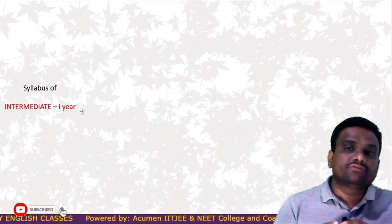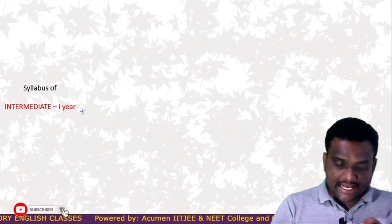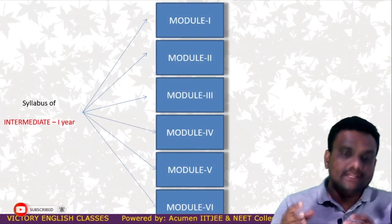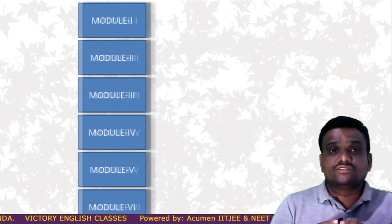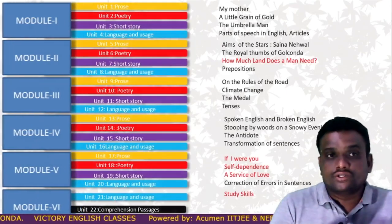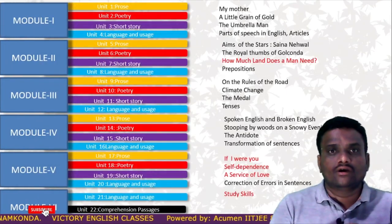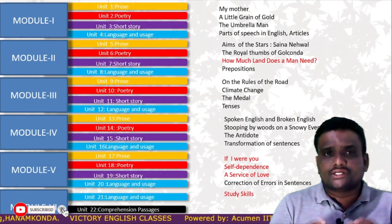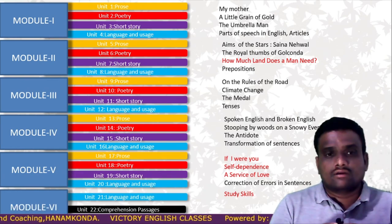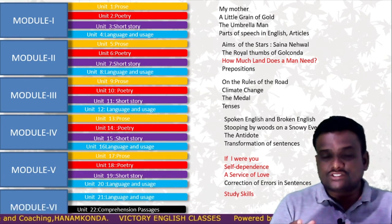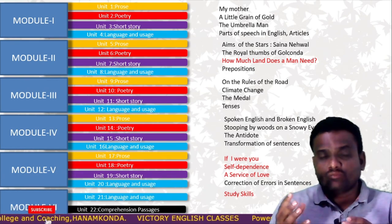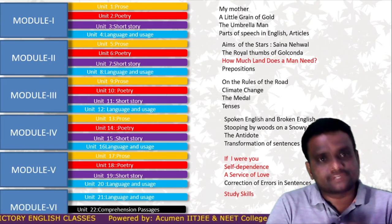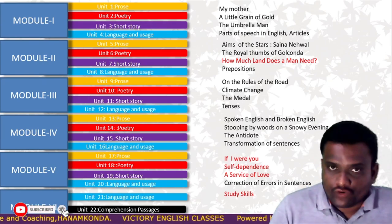The syllabus of intermediate first year English has been developed into six modules. You can see here the six modules. Five of these six modules have four units, commonly known as prose, poetry, short story, and language and usage. Whereas the sixth one is different from the above five modules because it has the unit comprehension passages.